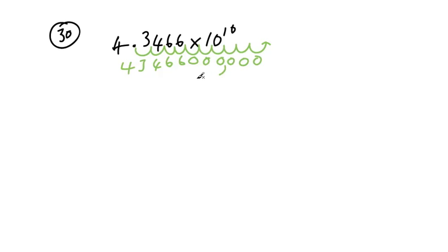So we can put in commas to make this easier to read. Every 3 from the right. So that gives us 43,466,000, and this is one of the answers as well.